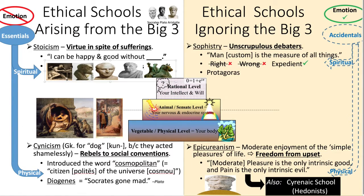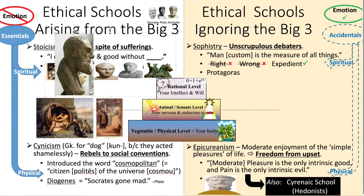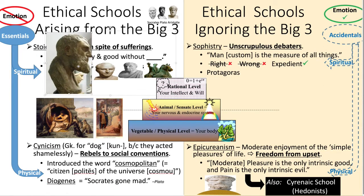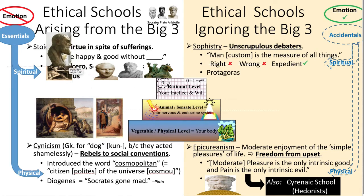A student of the cynics named Zeno came along and found his teacher making love to a woman — also a cynic — right in plain sight. In his horror, Zeno ripped off his cloak to cover them and said, 'This is not the way to go.' And Zeno started a new school of philosophy called Stoicism.